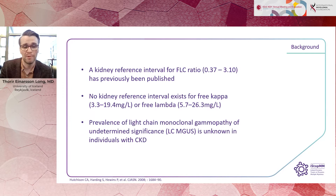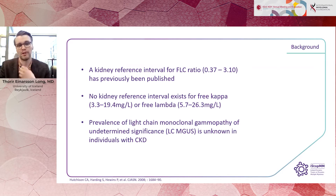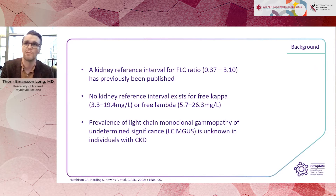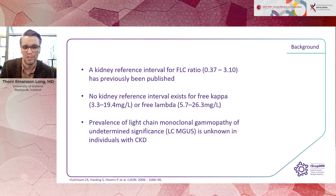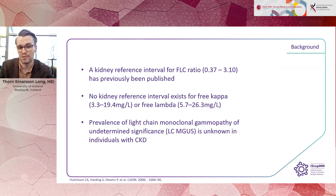There has previously been published a kidney reference interval for the FLC ratio — the ratio between kappa and lambda — of 0.37 to 3.1. But no kidney reference interval has been published for the absolute values of kappa or lambda, and we need both of those to detect a truly monoclonal disorder. The prevalence of light chain MGUS in individuals with CKD is also unknown.